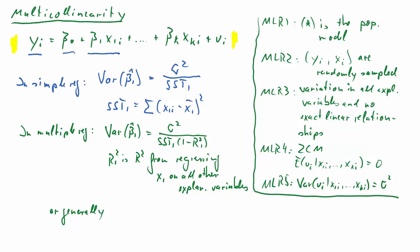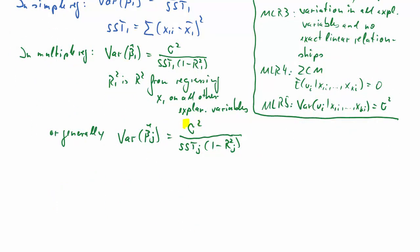In general, so this was the formula written down for beta 1 in particular. In general, it will read the variance of beta j hat is equal to sigma squared divided by SSTj times 1 minus Rj squared. But the definitions are just as above, just with j instead of 1.